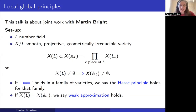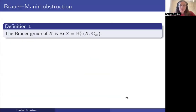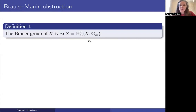If we're interested in understanding rational points, we should be interested in understanding these local-global principles and in particular understanding when they fail and why they fail. A common reason for failure of these local-global principles is given by the Brauer-Manin obstruction. This is an obstruction coming from the Brauer group of X — this second étale cohomology group attached to X.